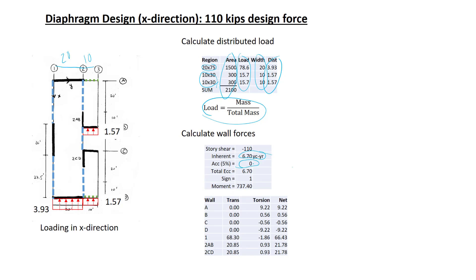The accidental eccentricity is taken to zero, because we don't consider accidental eccentricity in diaphragm design. We can calculate the moment, and if you have any questions about this, please review the previous video where we discussed this. For the walls in the x direction, there's a translational component. For all the walls, there's a torsional component. Summing up the translational and torsional components give us the net force in the wall, which we can then indicate in the diagram.